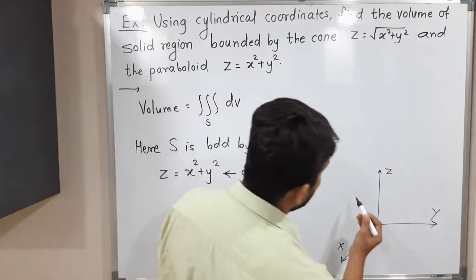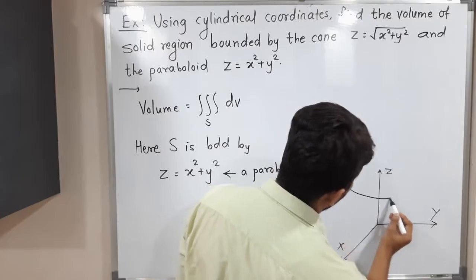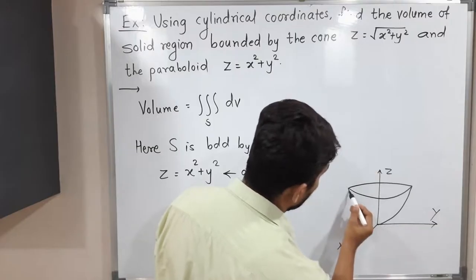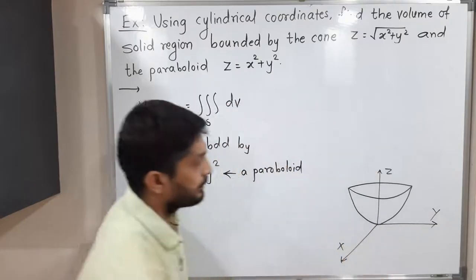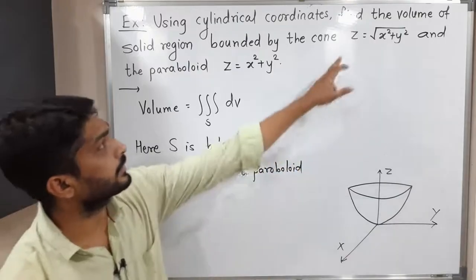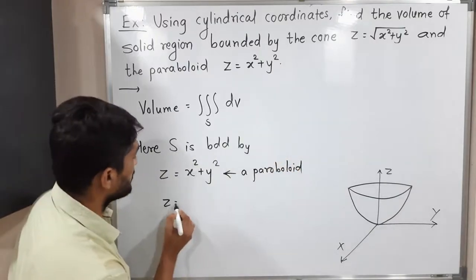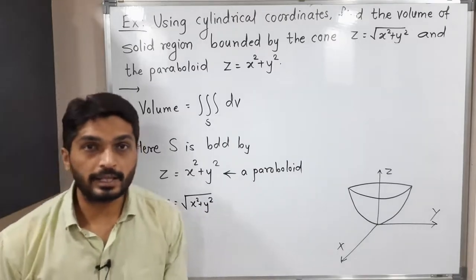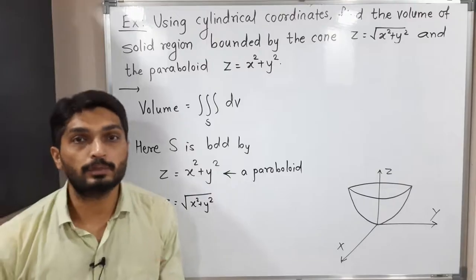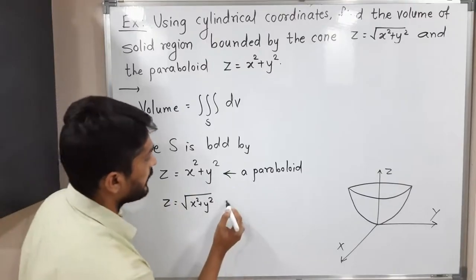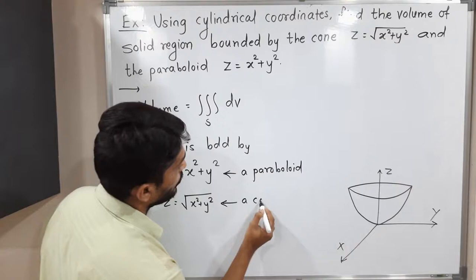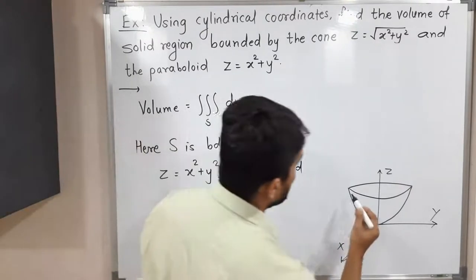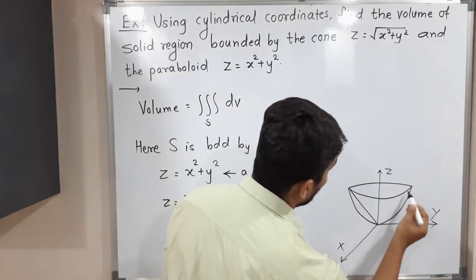So the parabola will be like this — let me draw a rough sketch. Our parabola will open upward along the z-axis. The second curve is z is equal to the square root of x squared plus y squared, or equivalently z squared equals x squared plus y squared. This is the equation of a cone, also centered around the z-axis.